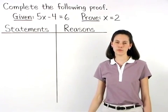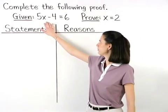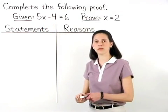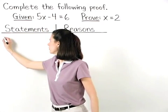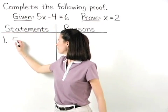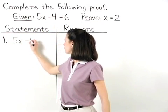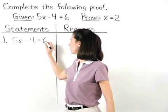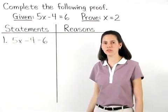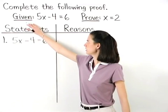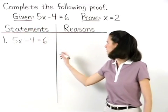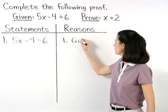The very first statement in our proof will be the given statement. So on the left, we can say that statement 1 is 5x minus 4 equals 6. And the reason for this statement is that it's given. So reason 1 is given.